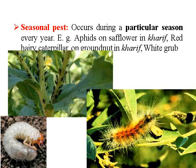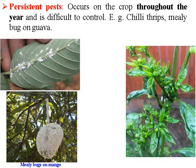These are seasonal pests and they occur every year in a particular season. Persistent pests occur on the crop throughout the year and are difficult to control. For example, chili thrips is very difficult to control. Even the mealybug on guava is also a very important and persistent pest of guava.